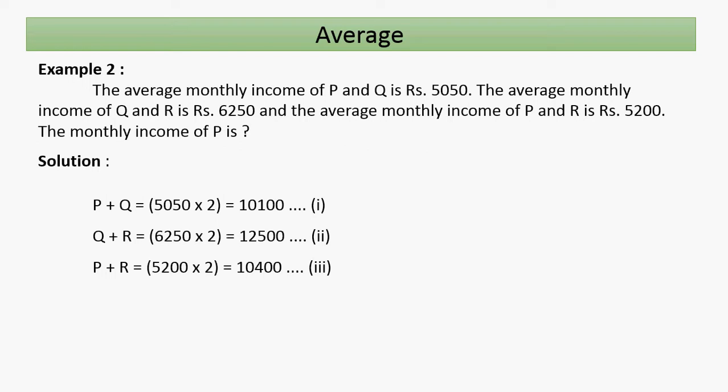Average of P and Q is 5050, multiplied by 2 gives a total of 10100. Average of Q and R is 6250, multiplied by 2 gives 12500. Monthly income of P and R is 5200 multiplied by 2, which equals 10400.